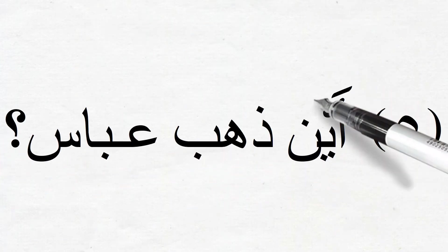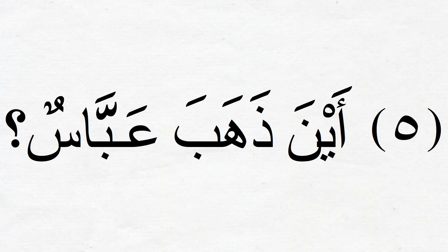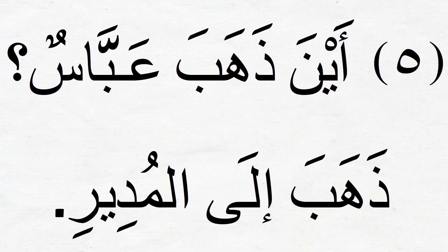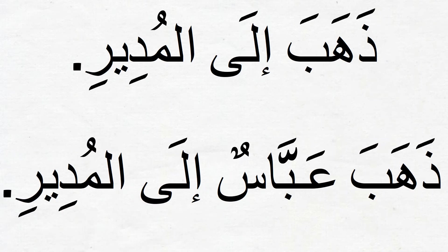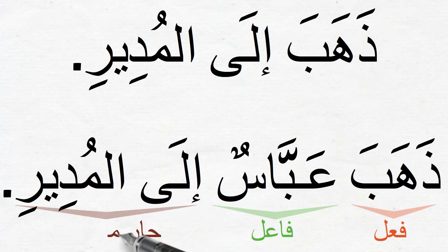Number five: Aina zahaba Abbasun? — 'Where did Abbas go?' We should say he went to the principal: Zahaba ilal mudiri. This is a jumlah fi'aliyya. If we bring the fa'al Abbas, we expand the verbal sentence and say: Zahaba Abbasun ilal mudiri. Here we have fi'al followed by fa'al, and then the Jar majroor ilal mudiri describing where Abbas went.